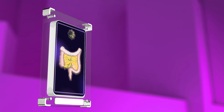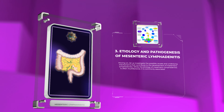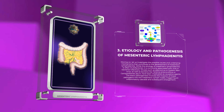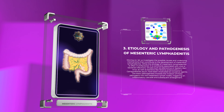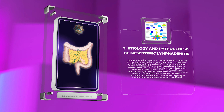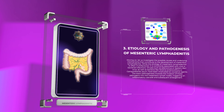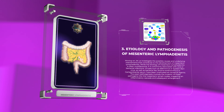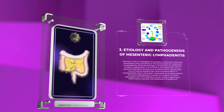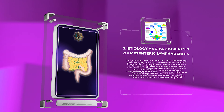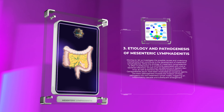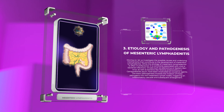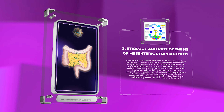Let us investigate the possible causes and underlying mechanisms that contribute to the development of mesenteric lymphadenitis. While the etiology is often multifactorial, it is commonly associated with viral or bacterial infections. Viruses such as adenovirus or Epstein-Barr virus, as well as bacteria like Yersinia enterocolitica or Campylobacter jejuni, have been implicated as causative agents. The exact pathogenesis involves the invasion of these pathogens into the mesenteric lymph nodes, triggering an inflammatory cascade and subsequent enlargement.